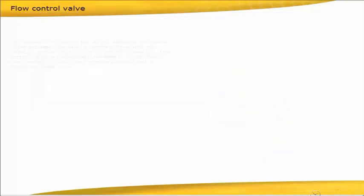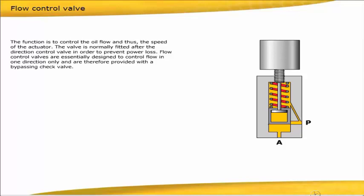The function is to control the oil flow, and thus the speed of the actuator. The valve is normally fitted after the direction control valve in order to prevent power loss.